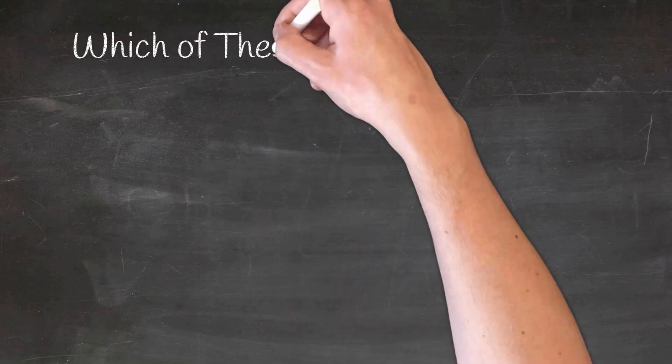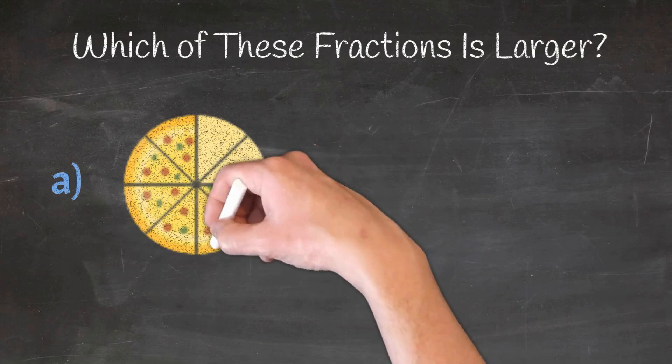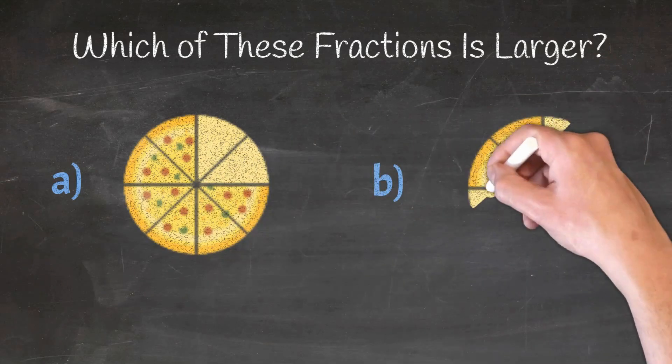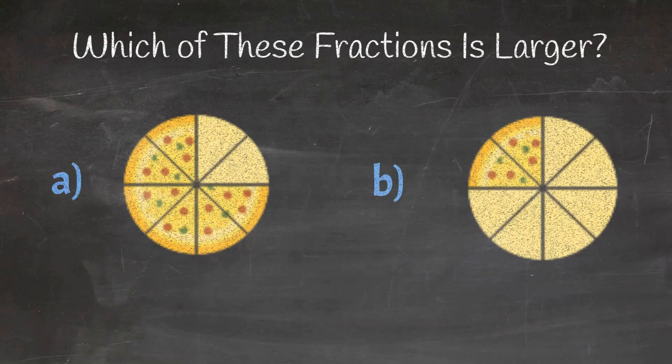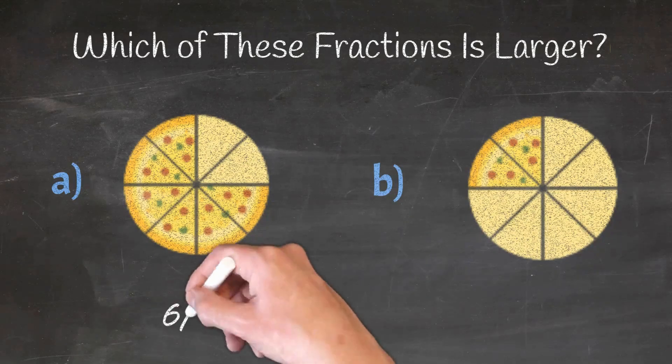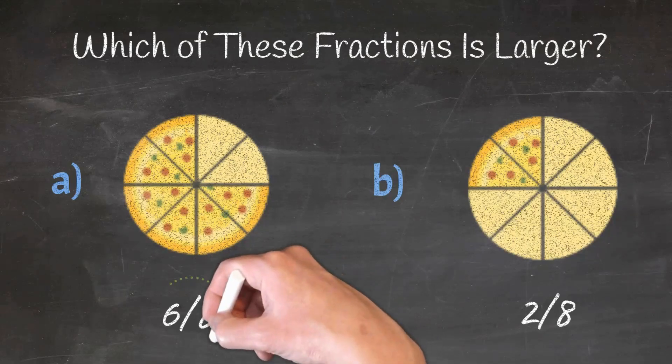Which of these fractions is larger? Fraction A or fraction B? Fraction A is six-eighths and fraction B is two-eighths, so fraction A is larger than B.